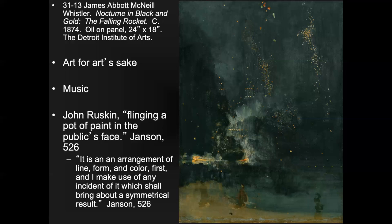Whistler actually sued John Ruskin for libel, since Ruskin was a prominent critic. Libel — similar in the US and UK legal systems — doesn't mean you can't say bad things about people. It means saying something untrue that makes it harder for that person to earn a living. You have to show it was a lie and that it directly affected your ability to bring in income.